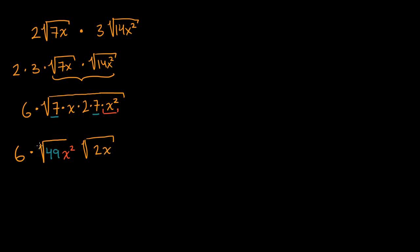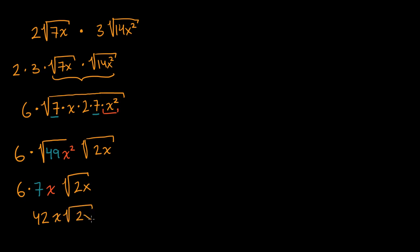Hopefully you'll appreciate that these two things are equivalent. I could have put one big radical sign over 49 x squared times two x, which would have been exactly the same. But if you're taking the radical of the product of things, that's the same as the product of the radicals. This comes straight out of our exponent properties. Now we can take the square root of 49 x squared — that's going to be seven x. Square root of 49 is seven, square root of x squared is x. And then we multiply that times the square root of two x. Six times seven is 42, so the answer is 42x times the square root of two x.